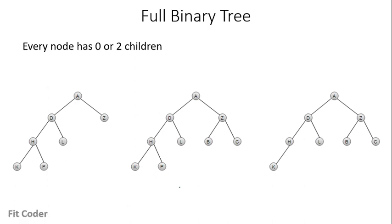A full binary tree is a tree in which every node has either zero children or two children. In the first example, every node has either two children or zero children. A has two children, B also has two children, H has two children, and K, P, L, and Z all have zero children. So this is a full binary tree.